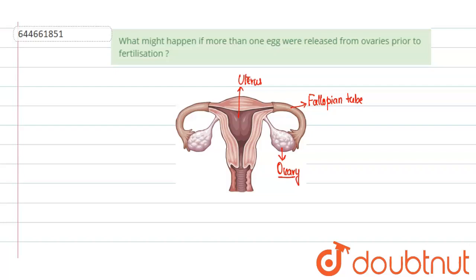If one egg is released — that is, ovulation occurs — there will be fertilization. After fertilization, we see the formation of a zygote, and this zygote is converted into a morula, then a blastula, and so on, ultimately undergoing implantation.